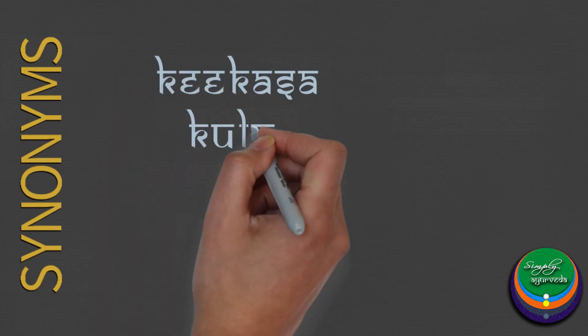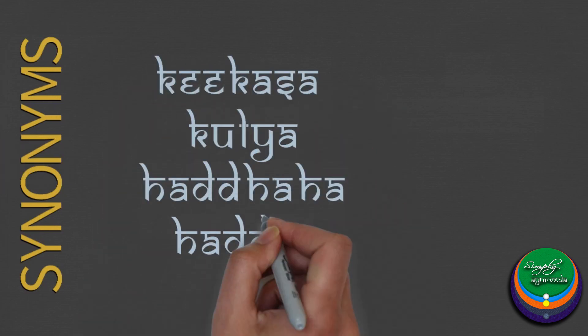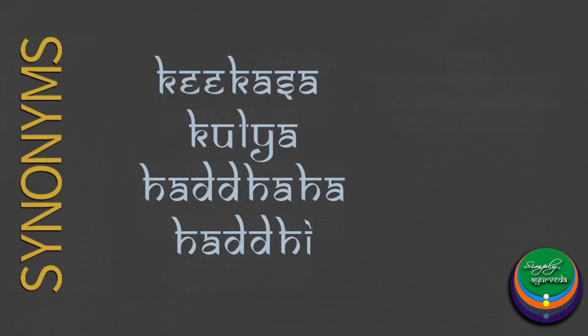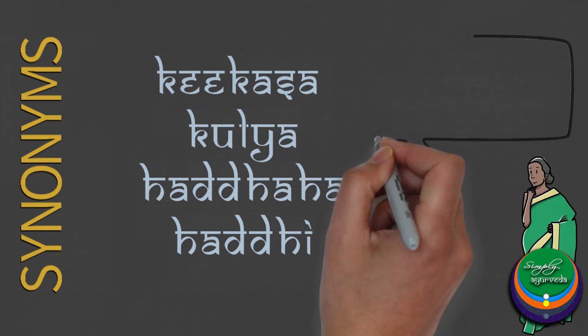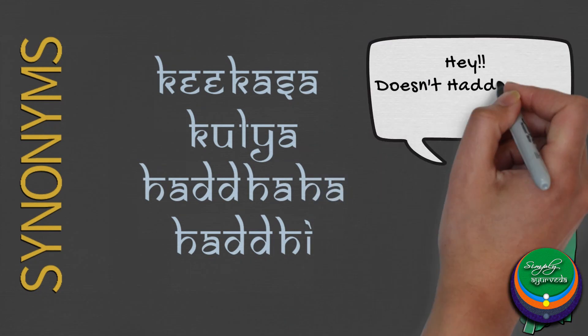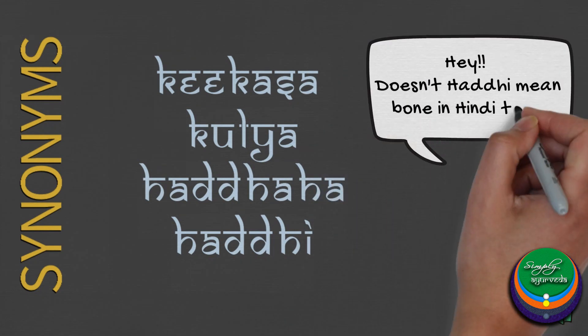The synonyms of Asthi include Kikasa and Kulya, as mentioned in Amarakosha, and Haddaha and Haddi, according to Abhinavashariram.